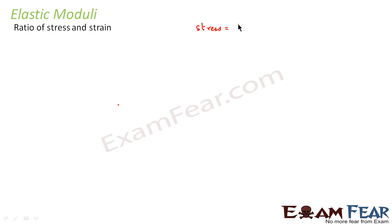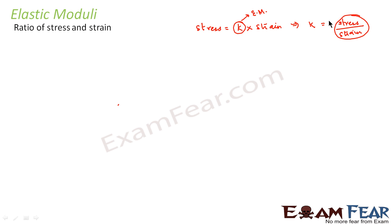Now we will study about elastic moduli. When I was explaining Hooke's law, I told you that stress is equal to a constant into strain. That constant was known as the elastic modulus. Elastic modulus is the ratio of stress and strain — this is the constant of proportionality. So the elastic modulus is equal to stress by strain.